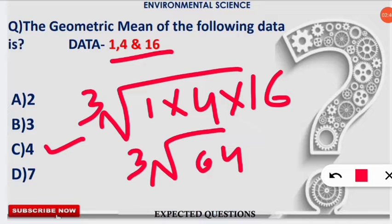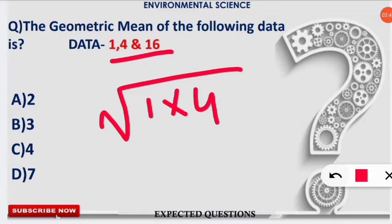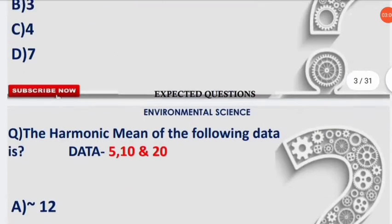For example, if only 2 data values were given, we would multiply 1 and 4 and take the second (square) root of 4, which is 2. Similarly, we apply this method for all given data sets. Let's move to the next question.